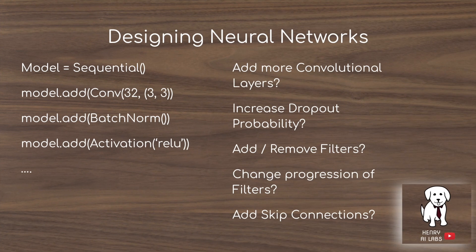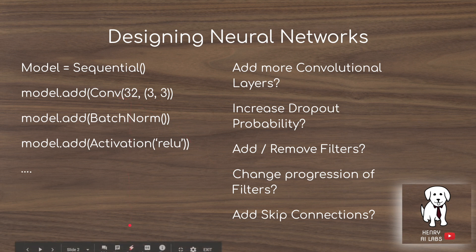When designing neural networks, you typically use something like Keras where you define a model, throw some layers at it, and see how it performs. Maybe you want it to get through each training epoch faster, or maybe you think it needs more complexity, or it's overfitting. So you might consider things like adding more convolutional layers, increasing the dropout probability, adding or removing filters like 32 up to 64, changing the progression of filters — say 32, 64, 96 — and adding skip connections, like a shortcut from one convolutional layer to a later one.